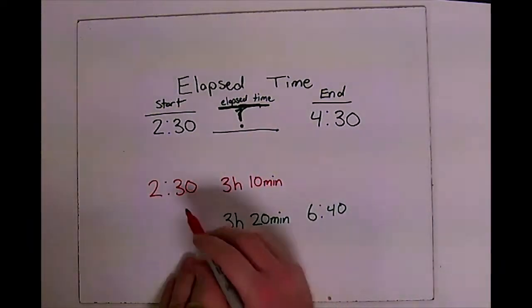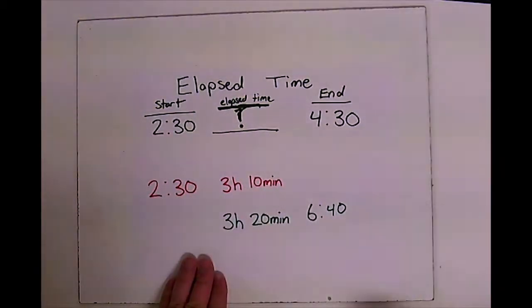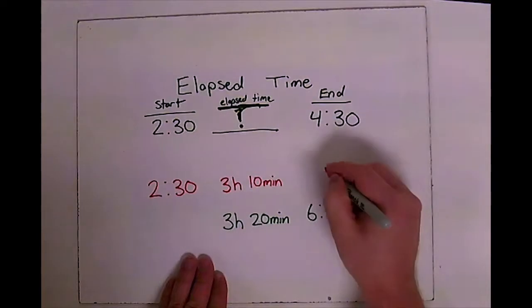Another one they might give you is they'll give you the start time, they'll give you how much time you spent at something, maybe a basketball game, and then you need to find the end time.